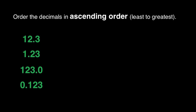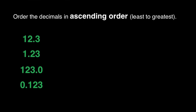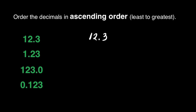Let us have some exercises. Order the decimals in ascending order — that is, from least to greatest. We have 12 and 3 tenths, 1 and 23 hundredths, 123.0, and 0.123 thousandths. The first thing we should do is align these decimals and align the decimal points in order to know which whole number part is the greatest. Let us now rewrite these decimals: 12 and 3 tenths, 1 and 23 hundredths, 123.0, and 0.123.